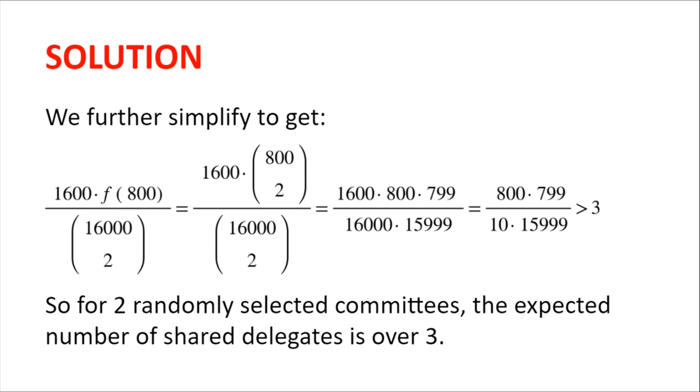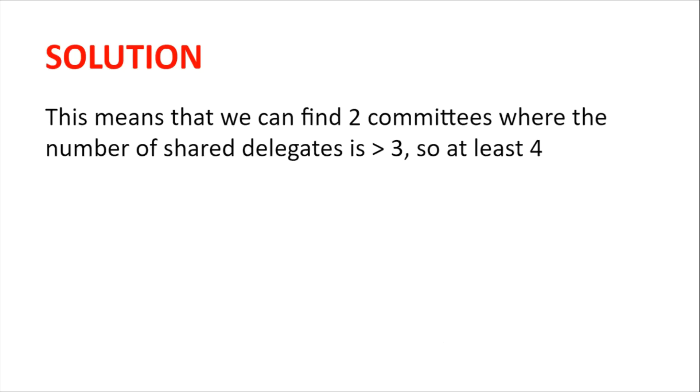And so for two randomly selected committees, the expected number of shared delegates is over three. This means that we can find two committees where the number of shared delegates is at least this value, which is three point something, so at least four, because the number of shared delegates has to be an integer. And so the solution is complete.